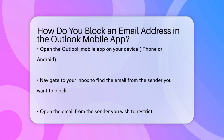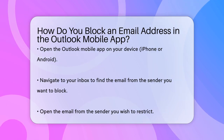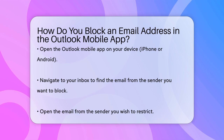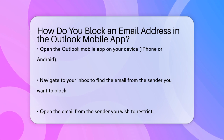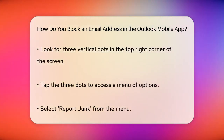First, open the Outlook mobile app on your device, whether it's an iPhone or an Android. Once you're in the app, navigate to your inbox and find a message from the sender you want to block.